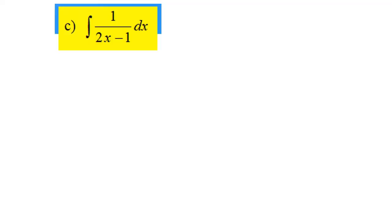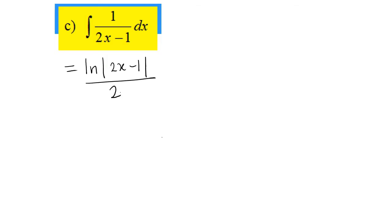So next, for part C, the coefficient here is 1, so no need to factorize. We may write as ln|2x minus 1| over the coefficient of x, which is 2, and then divided by 2 plus c.